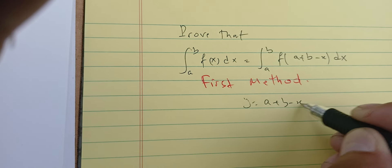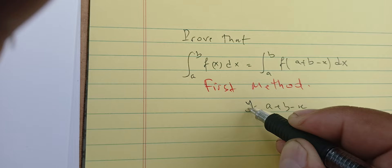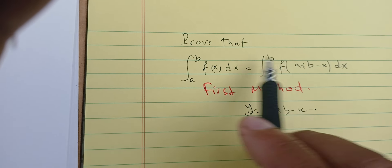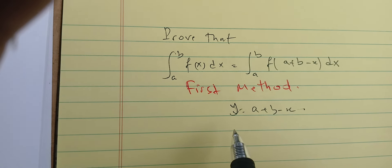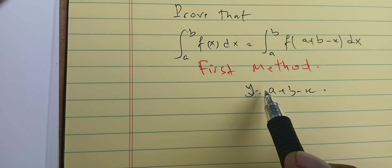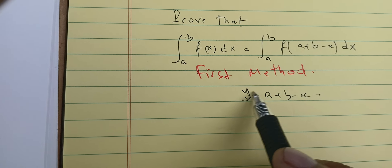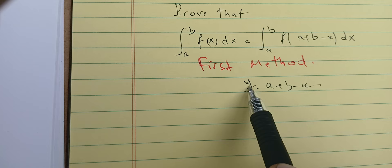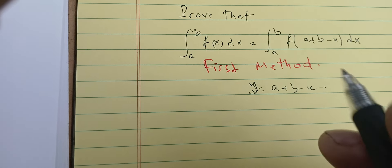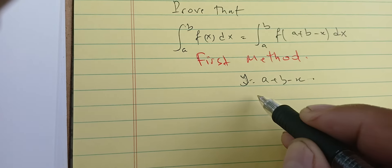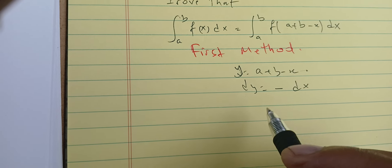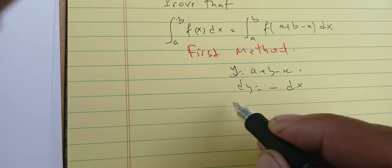We let y equals a plus b minus x. You can stop here and use this substitution to get from one integral to the other. Let's start working: we change the variable a plus b minus x by putting y equals a plus b minus x. The first thing we get is dy equals minus dx.